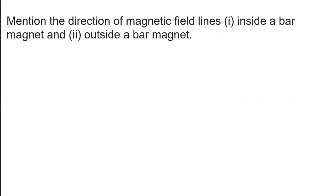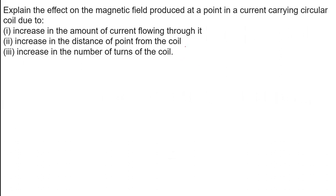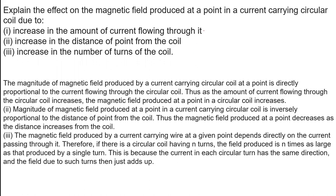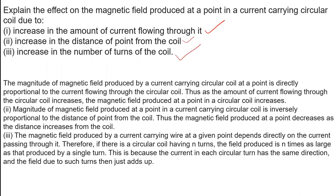Mention the direction of magnetic field lines inside a bar magnet. Inside the bar magnet it is south to north, and outside the bar magnet it is from north to south. Explain the effect on the magnetic field produced at a point in a current-carrying circular coil. Increase the amount of current flow — the magnetic field also increases. Increasing the distance — the magnetic field decreases. Increasing the number of turns on the coil — the magnetic field increases.